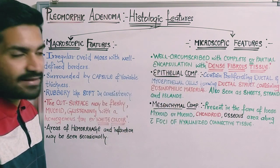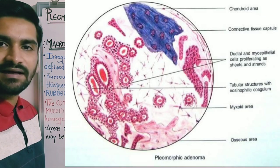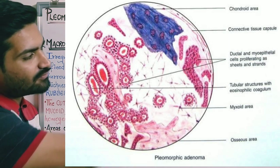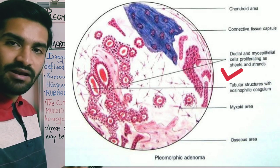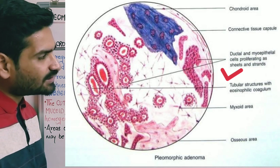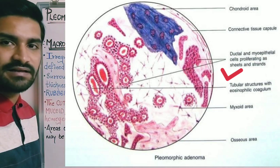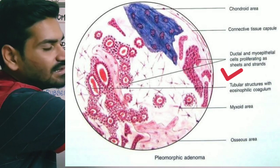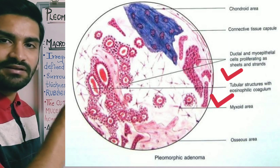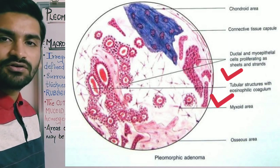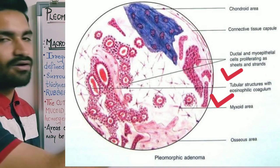There are two components in pleomorphic adenoma: the epithelial component and the mesenchymal component. The epithelial component contains proliferating ductal and myoepithelial cells, arising from intercalated ductal cells or myoepithelial cells of the salivary gland. These form ductal structures containing eosinophilic material inside the ducts.